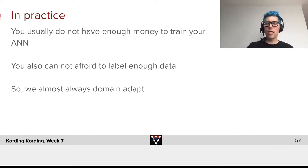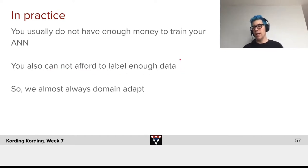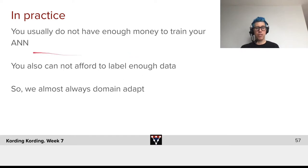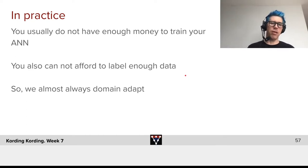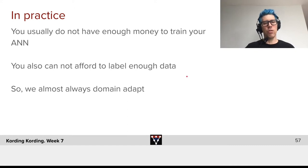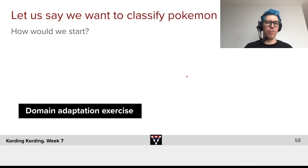And in practice, you can also often not allow yourself to label enough data — it's expensive. And if you want a really deep, really rich neural network of the object recognition variety, for example, you will simply not be able to label the millions of images that you'd otherwise need. So in practice, you almost always need to do domain adaptation, and it buys you a lot of mileage.